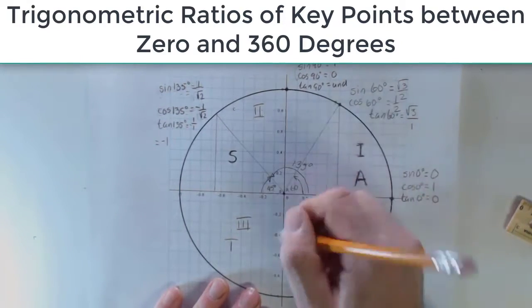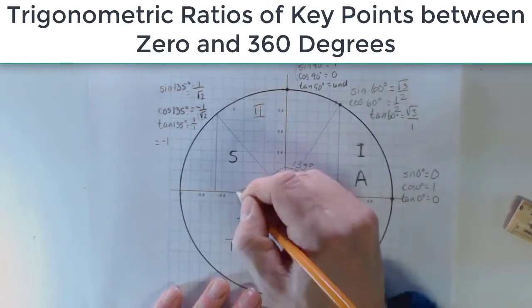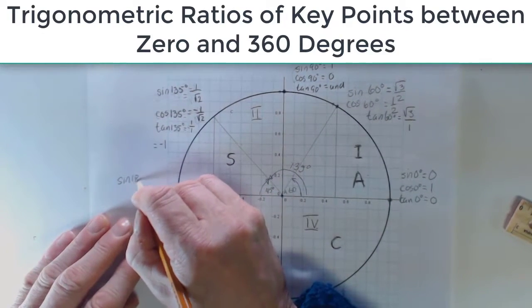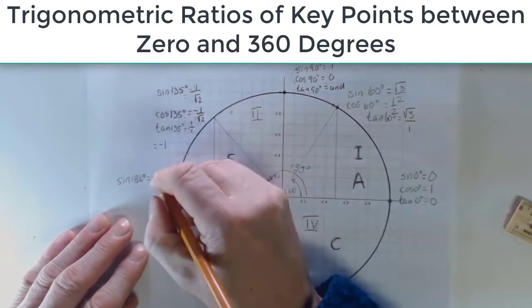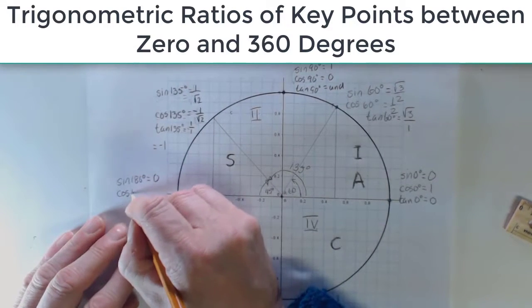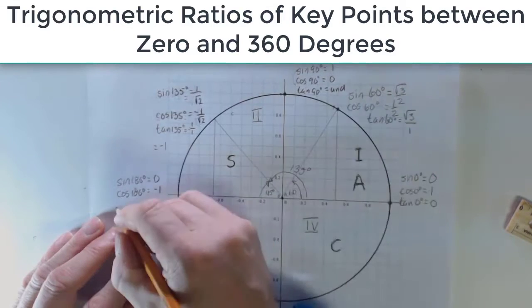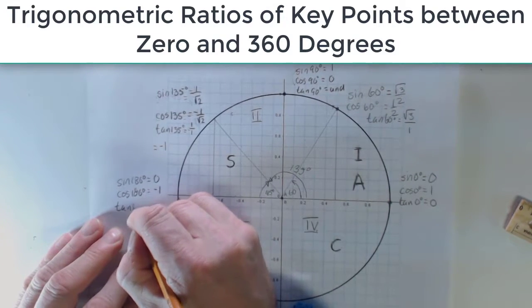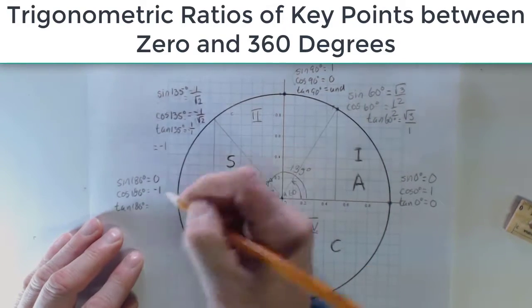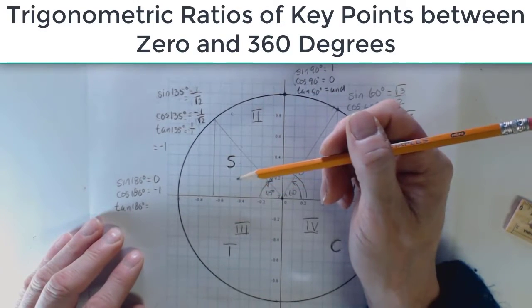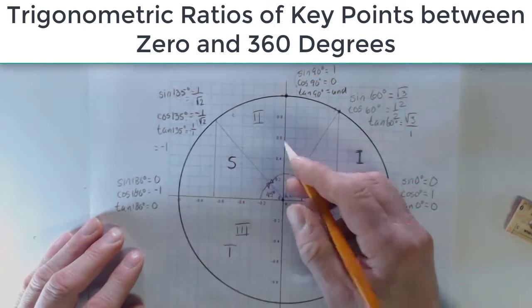Last one. You can do this fourth one yourself. Let's go all the way over here to the sine of 180 degrees, and that is just the y-coordinate, which is zero. Cosine of 180 degrees is the x-coordinate, which is negative one, and the tangent of 180 degrees is the y-coordinate divided by the x-coordinate, and zero divided by negative one is zero.